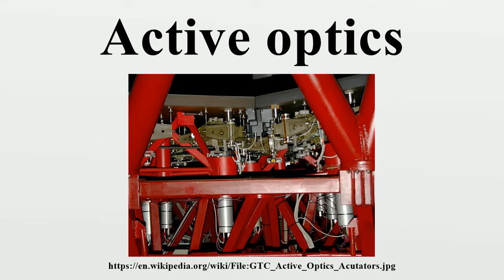The combination of actuators, an image quality detector, and a computer to control the actuators to obtain the best possible image is called active optics. The name active optics means that the system keeps a mirror in its optimal shape against environmental forces such as wind, sag, thermal expansion, and telescope axis deformation.